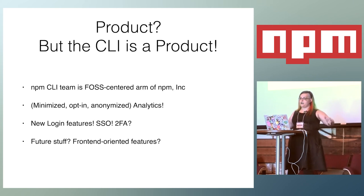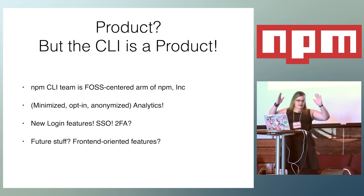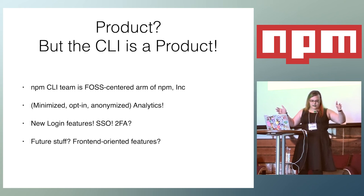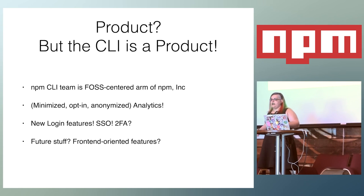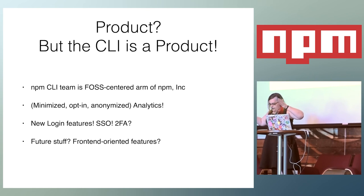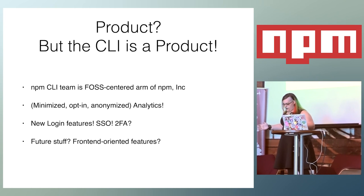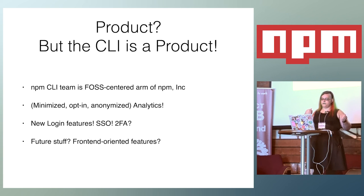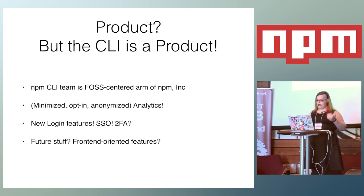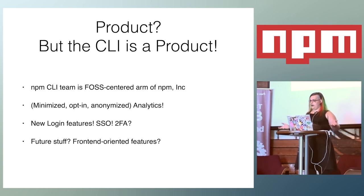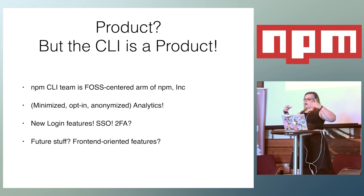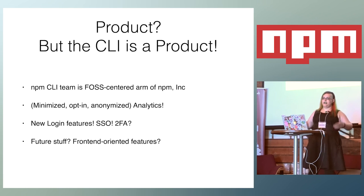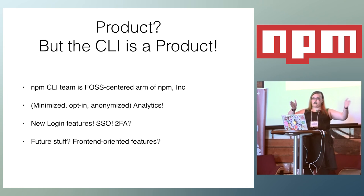Finally, I want to talk a little about product. The CLI team is basically the open source arm of NPM Inc. We are the ones really facing the big open source community — we are the thing that people install, and everything that we do is open source. We are still part of NPM Inc. and we are supporting their efforts. Product work basically means things that will make the company money and then directly benefit the open source community.